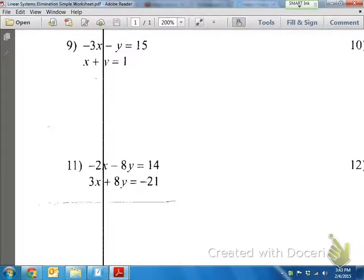Okay, so let's also look at number 11 here. Again, we're doing linear systems with elimination, because both equations are in standard form, and see how both x and y are on the left and the constants are on the right?